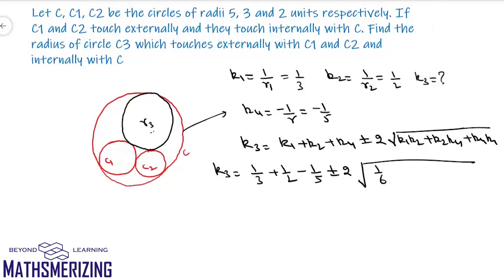This is 1 by 6 minus 1 by 10 and minus 1 by 15. So if I take LCM 30, this is 10 plus 15 minus 6, and this is plus minus twice, and here again it will be 30.